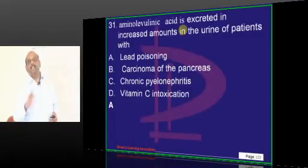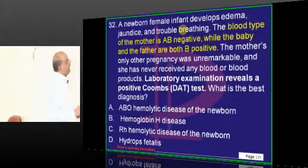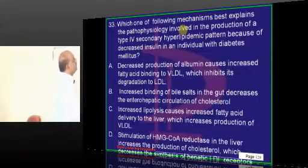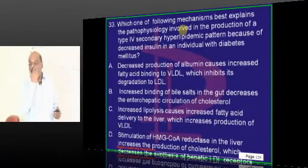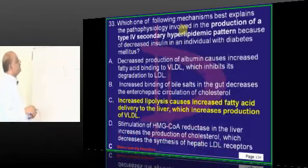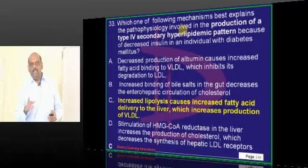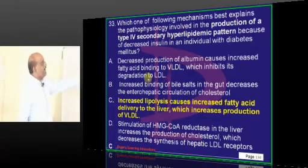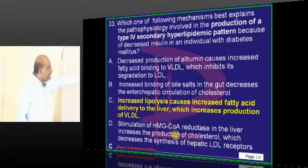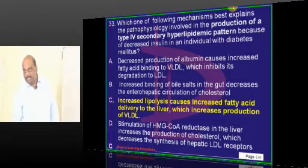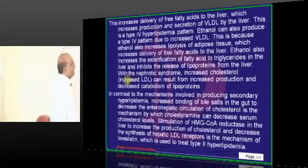Aminolevulinic acid is increased in lead poisoning. A Rh-negative mother with Rh-positive baby will land up in Rh isoimmunization. Type 4 hyperlipidemia pattern — with decreased insulin, insulin deficiency leads to lipolysis, increased fatty acid delivery to the liver, conversion to triglyceride, and increased VLDL production, so high triglyceride typically happens in insulin deficiency.